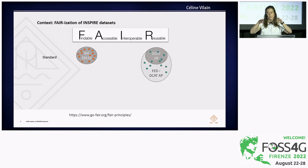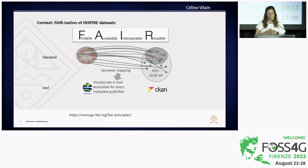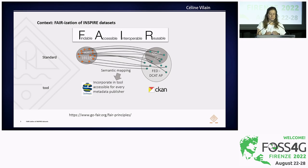The concept is: we extend the DCAT-AP standard by adding attributes so that we can make a semantic mapping between the ISO and the DCAT-AP standard. We want to go further than that — making from that semantic mapping a technical mapping — so that we incorporate the semantic mapping into a tool where every metadata publisher can directly convert ISO to the DCAT-AP standard. Our metadata is in GeoNetwork, so the tool has to be related to GeoNetwork.